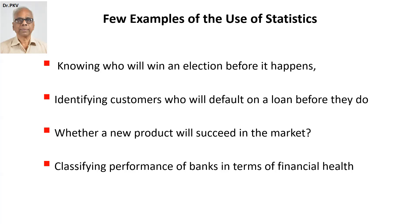Whether a new product will succeed in the market — I do test marketing using statistics, and if I get a threshold market share or consumer acceptance, I will say the probability that the new product will succeed is 90% or 80%, whatever risk I'm willing to take. Based on that, I will decide whether to go ahead with the launch. Then there is performance classification — financial performance of banks leading to the health of the bank can be categorized using statistical analysis into three or four categories.